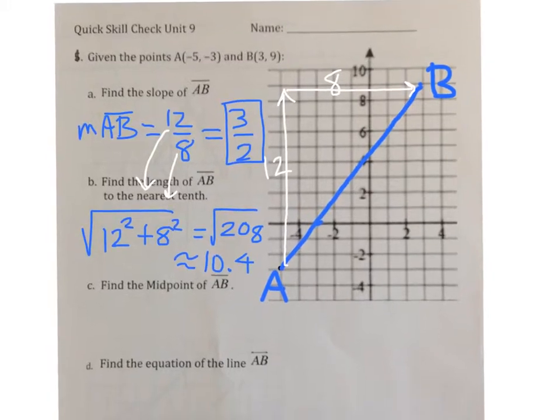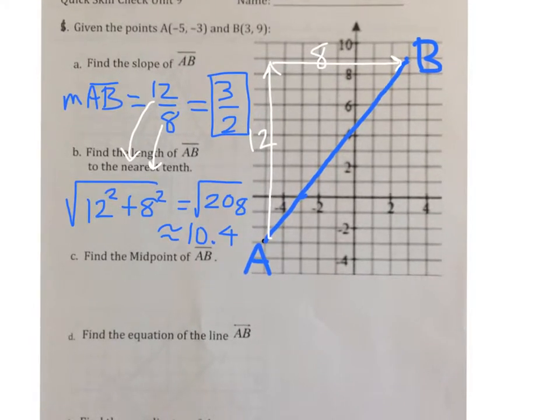To find the midpoint, we can use the graph again. Instead of running the entire slope up 12 over 8, we can cut it in half and go up 6 over 4 to find the midpoint. This looks as if it is exactly halfway between A and B. So the midpoint ends up at the point (-1, 3).